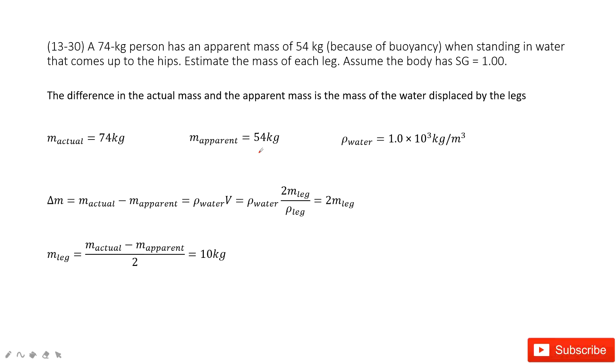In this one, we know a person standing in water that comes up to the hips. We need to estimate the mass of each leg. It tells us the mass of this person and the apparent mass for this person.